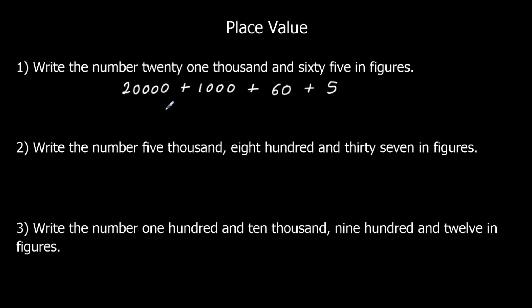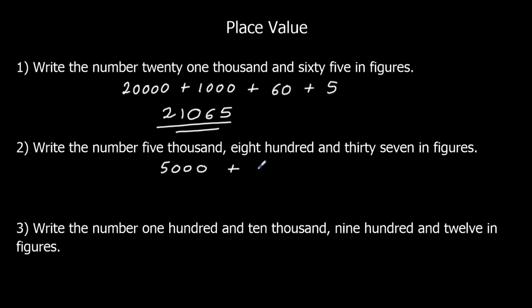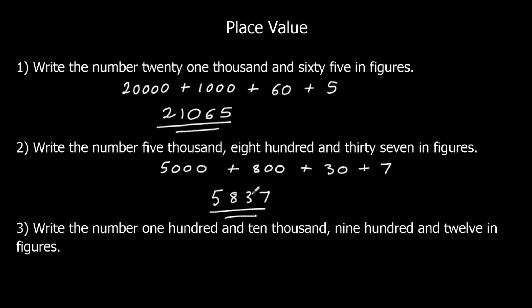We've got a 2 in the ten-thousands column, a 1 in the thousands column, nothing in the hundreds column so we put a zero there, 6 in the tens, and 5 in the ones. Question 2: write the number 5,837 in figures. That's 5 in the thousands, 8 in the hundreds, 3 in the tens for 30, and 7 in the ones. So the answer is 5,837.